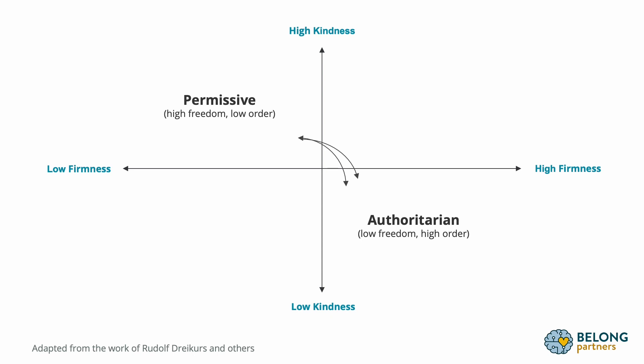Before we dive into that, let's look at that bottom left corner — a household or classroom where there is not much firmness and not much kindness. This is sometimes referred to as neglect, but not with a sense of blame, because oftentimes there are circumstances that lead to this situation. The young person in that situation will probably need a lot of extra support in other environments. We see this sometimes with teacher burnout — not because the teacher doesn't care, but because systemic problems make it really challenging to show up the way we'd want to.